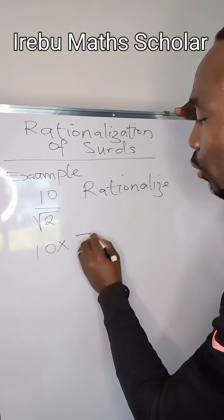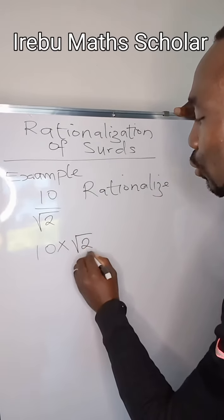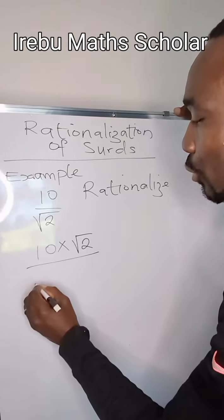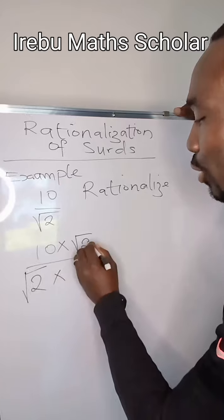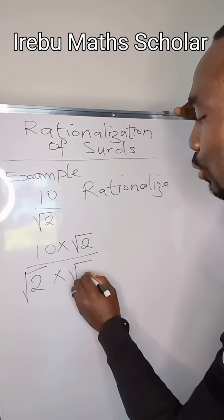What we have here is root 2. We multiply here by root 2, all over we also have root 2 times root 2.